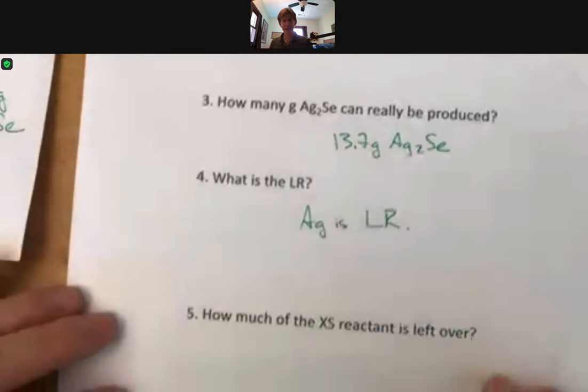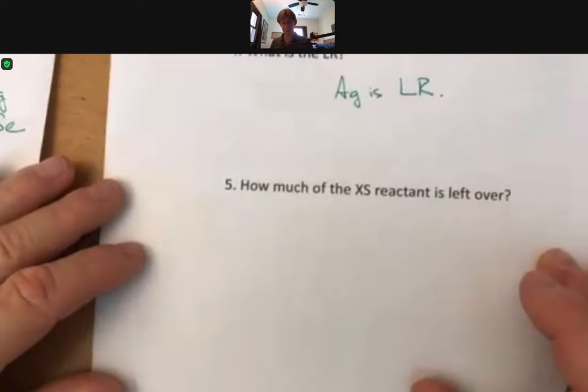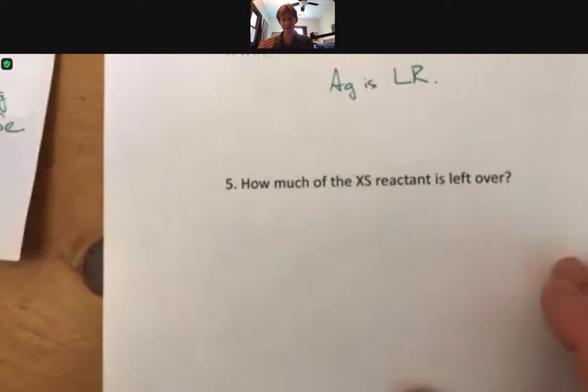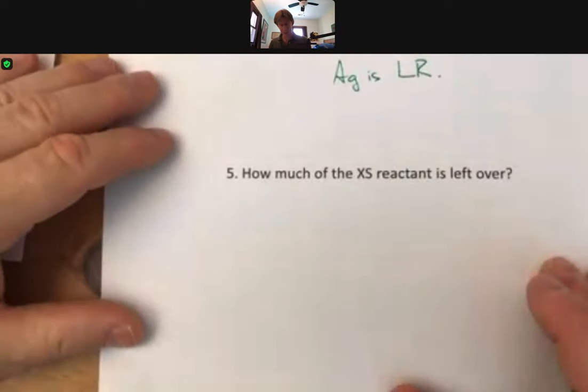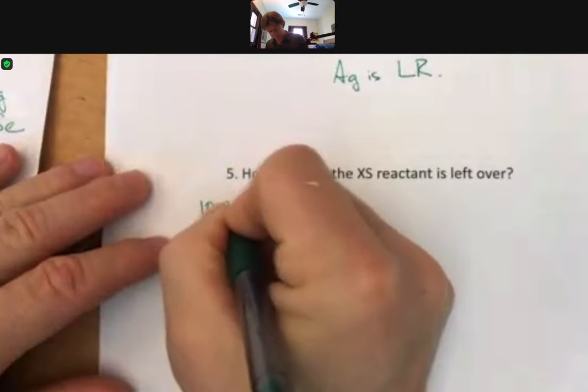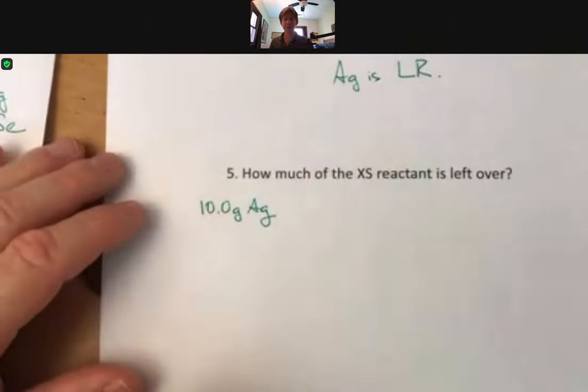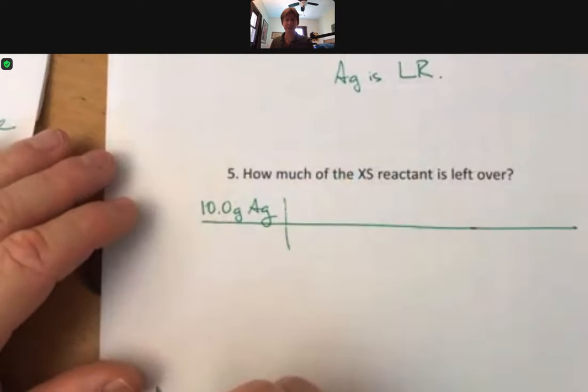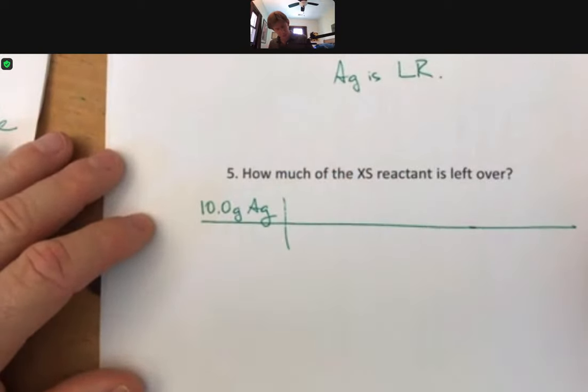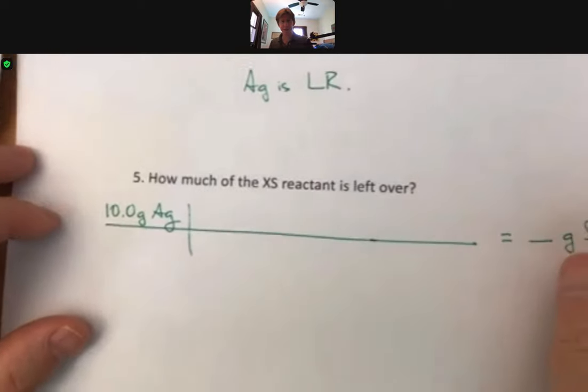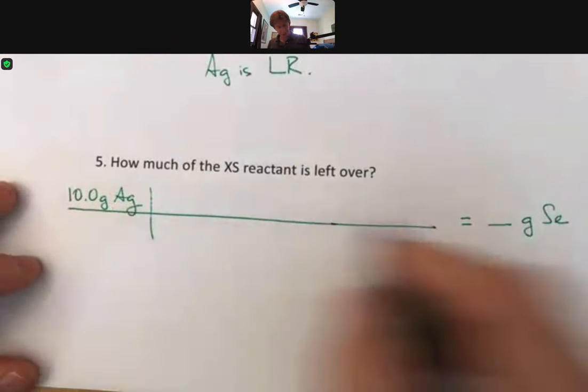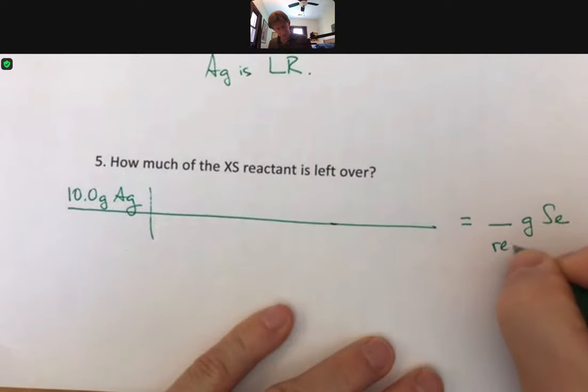Let's go to the next page. It says how many grams of silver selenide can actually be produced? And we know that the answer to that is from the previous slide: 13.7 grams because it's the smaller amount. 13.7 grams of silver selenide. What is the limiting reactant? Silver is limiting reactant. And now how much of the excess reactant is left over?